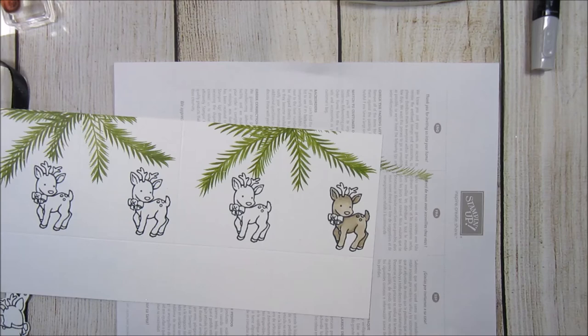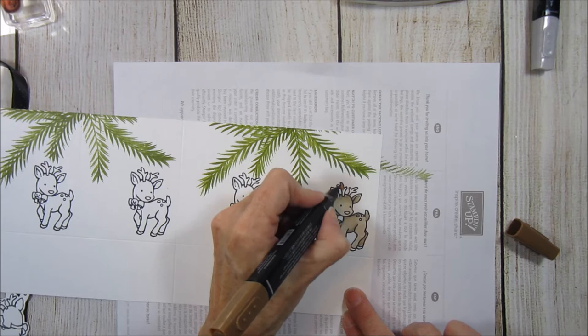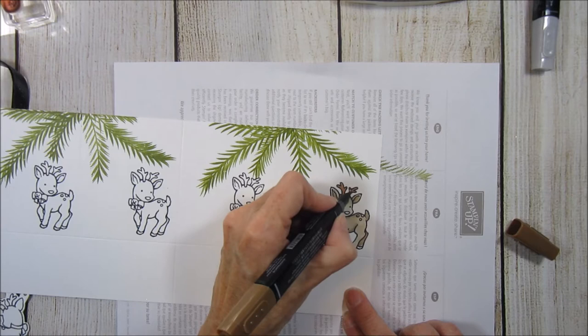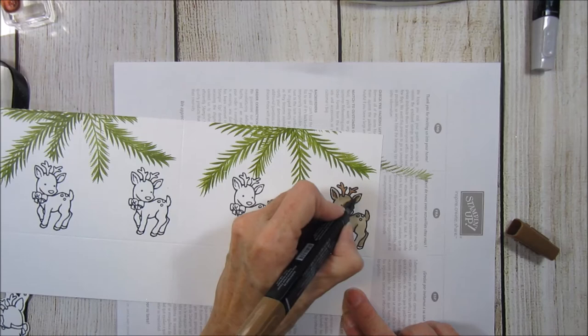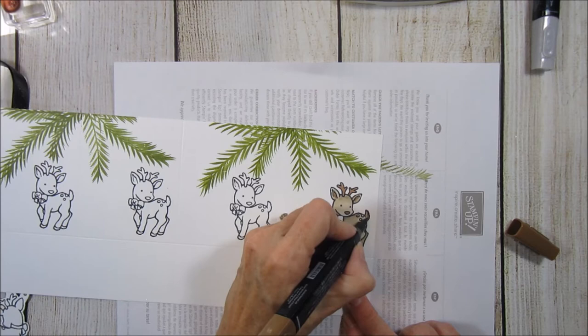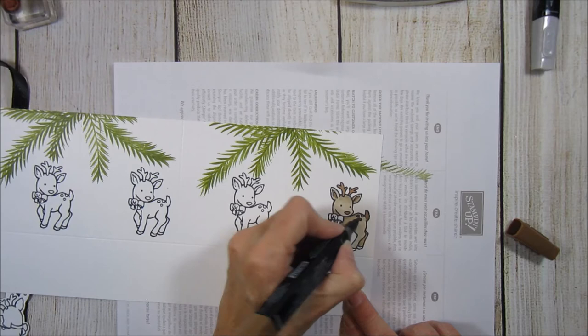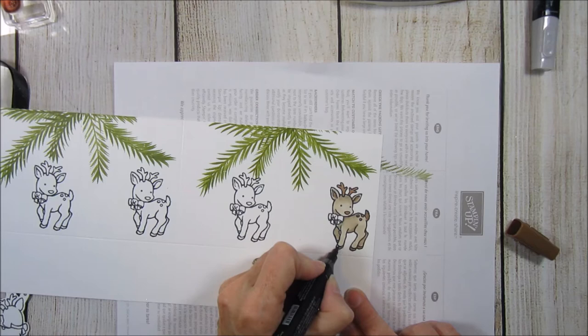And then with the bronze, I'm going to come back and do his antlers, a little bit on the inside of his ear, his nose, his tail, and his spots, and his hooves.